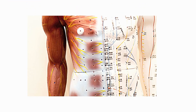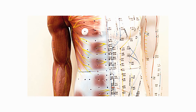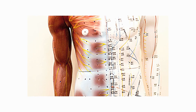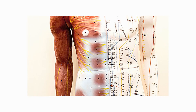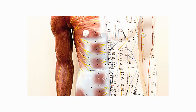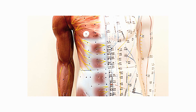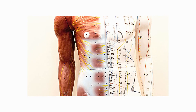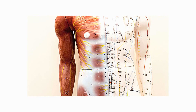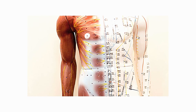Our thoughts also directly influence the flow of energy within the meridian system and the state of your physical body and health. This includes your organs, the nervous system, your blood circulation, hormonal balance, muscles and bones, your breathing, digestion, and the structure and function of our cells.